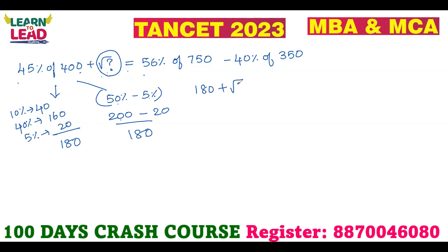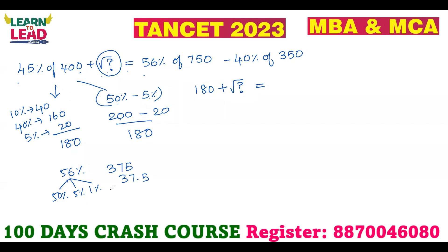180 plus square root of question mark is equal to 56% of 750. Split 56% as 50%, 5%, and 1%. 50% of 750 is 375. 5% is 37.5. 10% of 750 is 75, so 1% is 7.5. Add all values: the answer is 420.